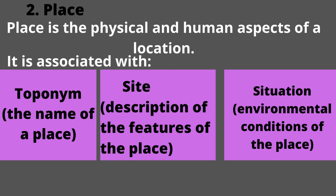Toponym denotes the name of a place. Site refers to the description of the features of the place — it is about the internal features of the place. Situation refers to the environmental conditions of the place and gives a detailed explanation regarding the surrounding environment. Each place in the world has its unique characteristics expressed in terms of physical and human landscape.